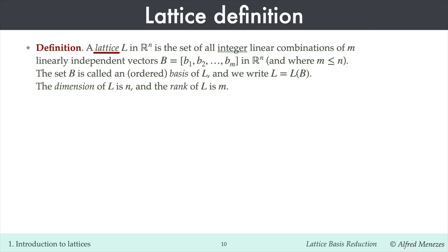A lattice L in n-dimensional real space R^n is the set of all integer linear combinations of m linearly independent vectors b1, b2 up to bm in R^n, where m is less than or equal to n. The set B is called a basis of L, and we write L equals L of B. The dimension of L is n, and the rank of L is m.